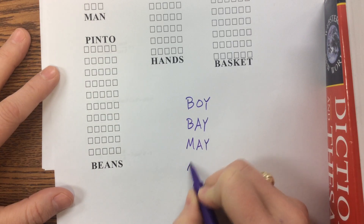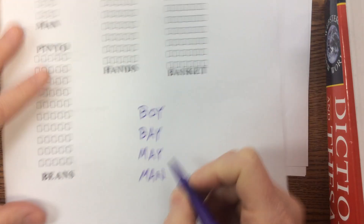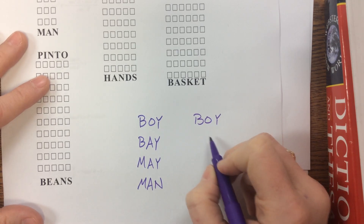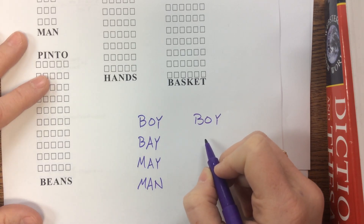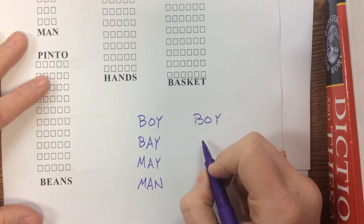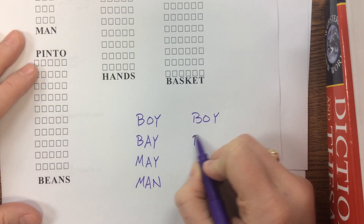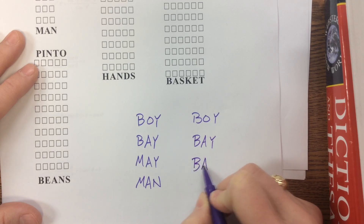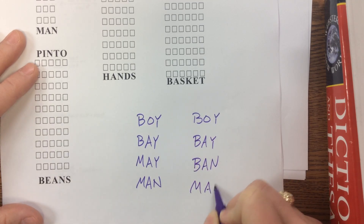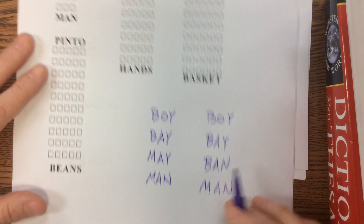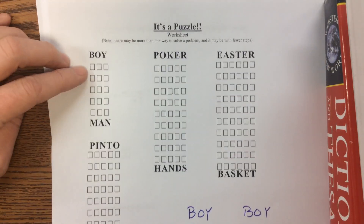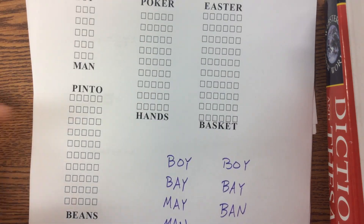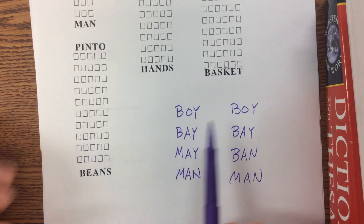From bay to may to man. I've also seen boy to well, then bay to ban to man — so different things like that. You've got different options; you can take longer or shorter paths. On this one I had a bunch of boxes — you didn't need all of them. Have some fun with that; it's just fun and silly.